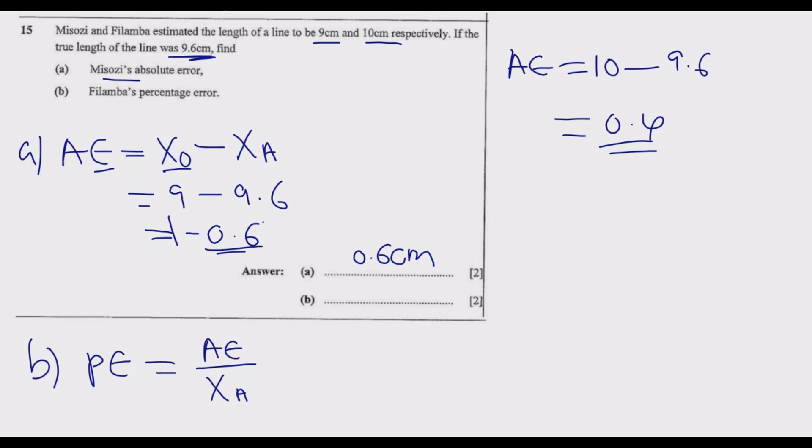Remember the answers are to be given in absolute terms. The difference here is that Filamba overestimated while Misozi underestimated. That's why Misozi is negative and Filamba is positive.